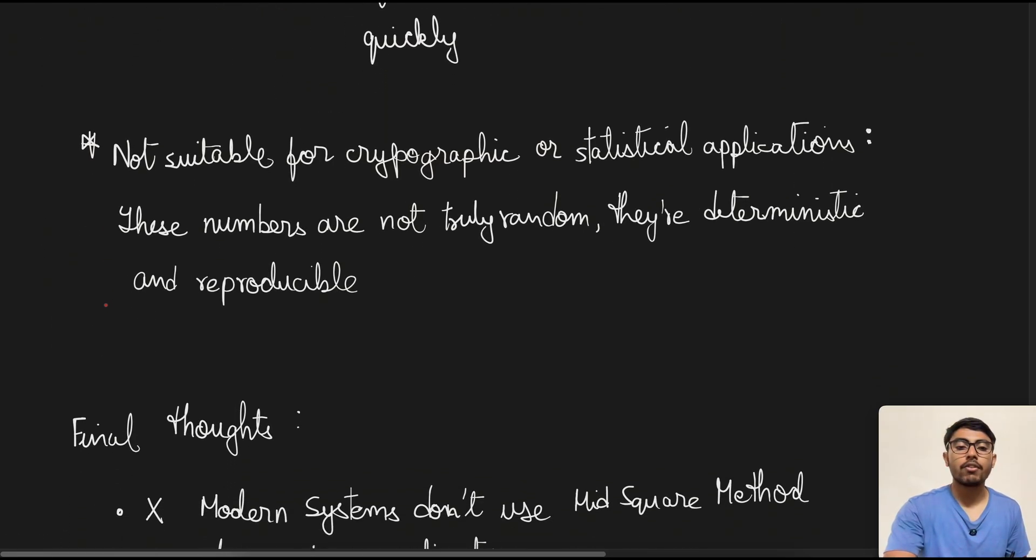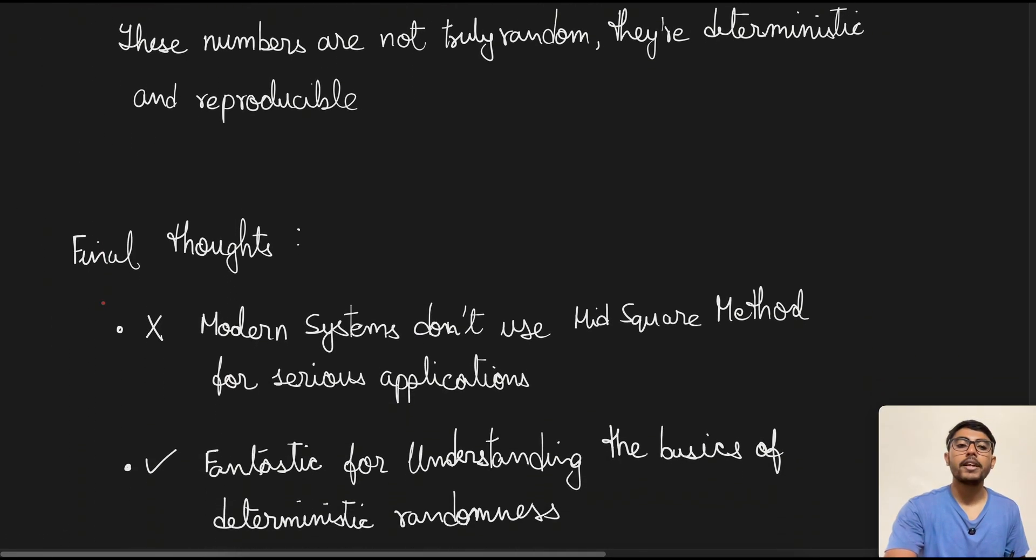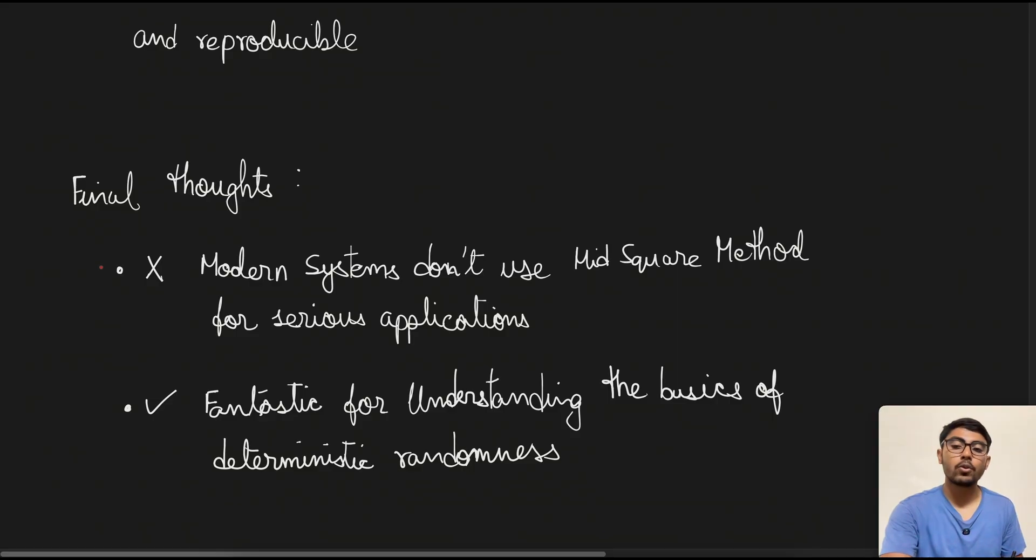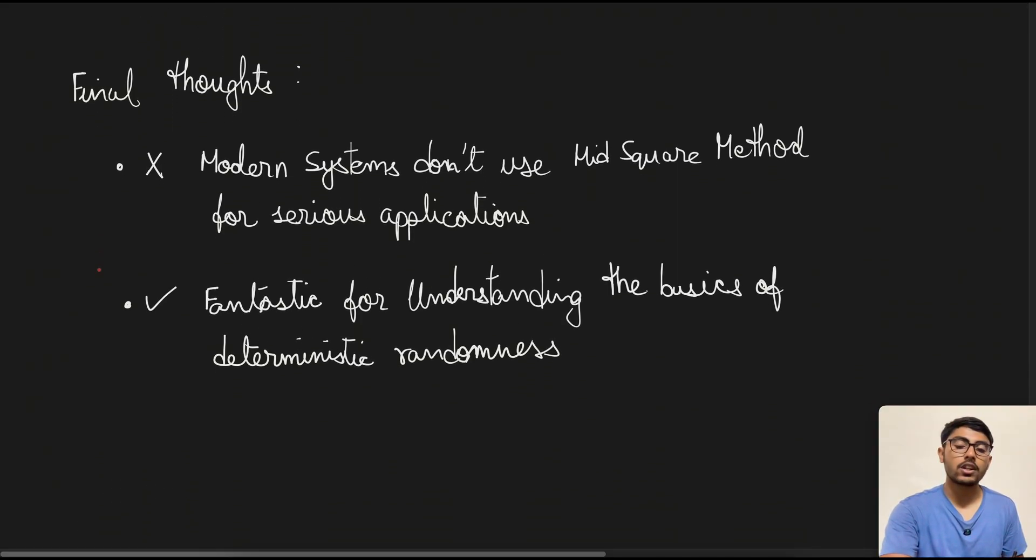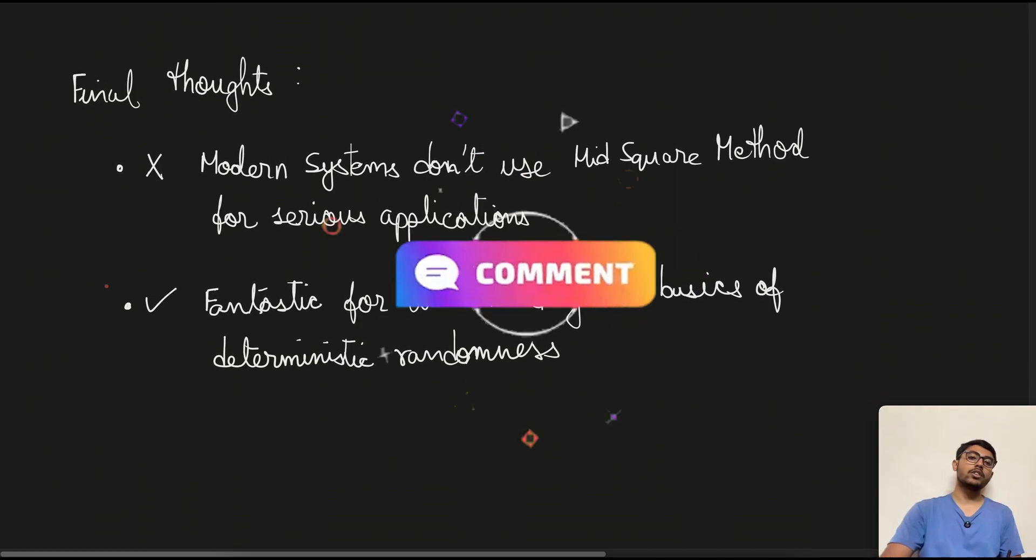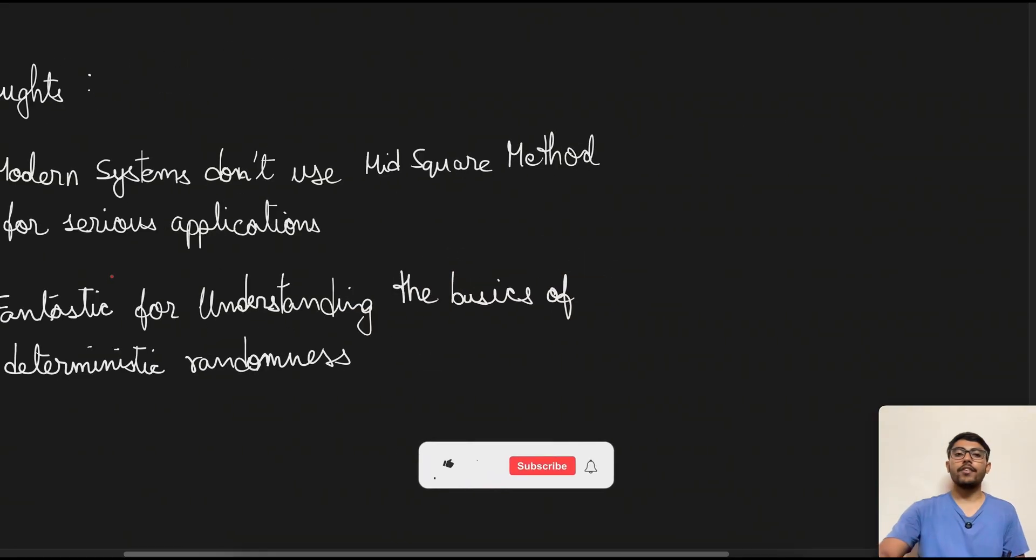So the final thoughts for the mid square method would be that modern systems don't use this method for serious applications. But this is very fantastic for understanding the basics of deterministic randomness. So let me know how far your sequence went before repeating or converging for the above problem. And if you still have any doubts, then feel free to reach out in the comment section below. If you liked this video, then give it a thumbs up and subscribe to my channel for the upcoming videos.